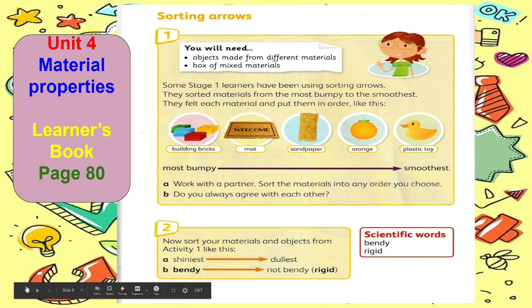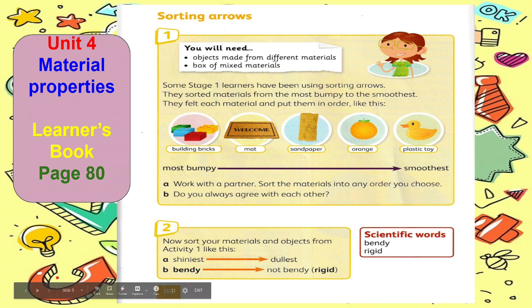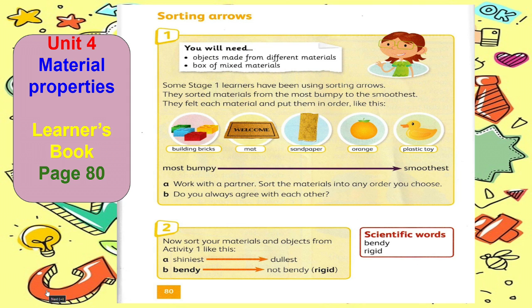Everything around us is made from materials, and all objects are made from these materials like plastic, paper, fabric, glass, wood, leather, ceramics, and a lot more.